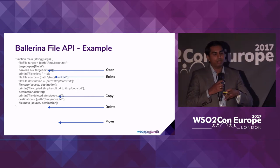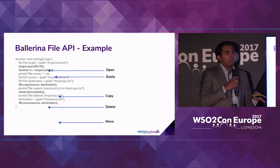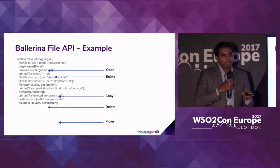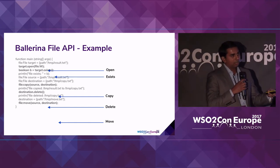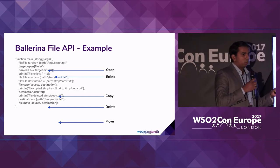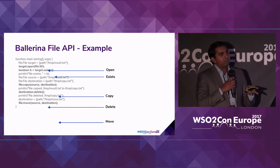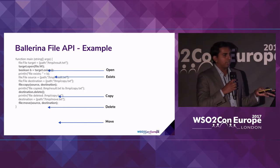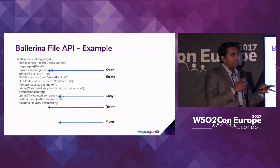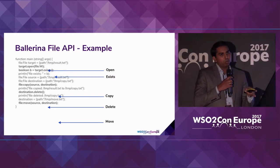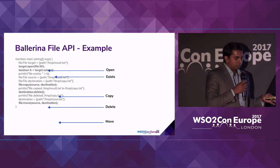These APIs provide capabilities to access file information at a very high, coarse-grained level. This was the kind of functionality we had in the existing ESB product as well — you could move files using the file connector or VFS transport. When designing the Ballerina APIs we kept these capabilities and improved them based on experiences from our customer engagements.